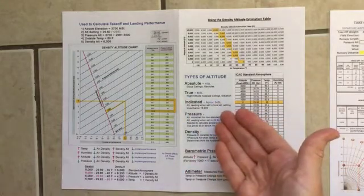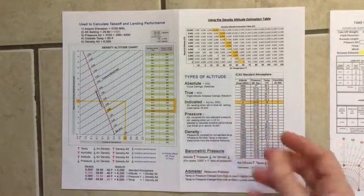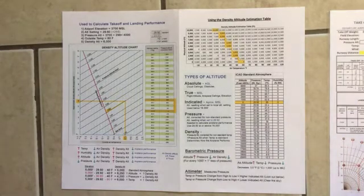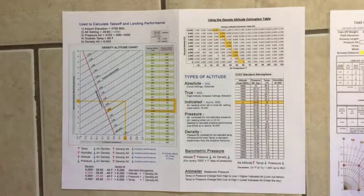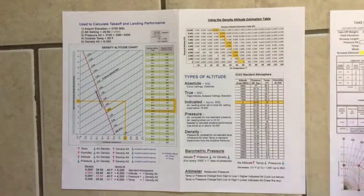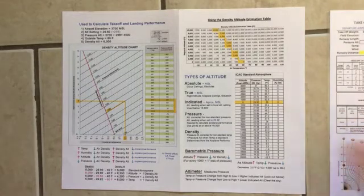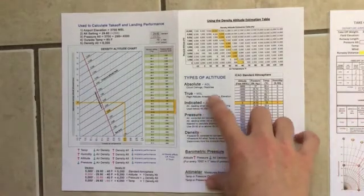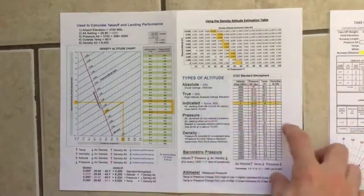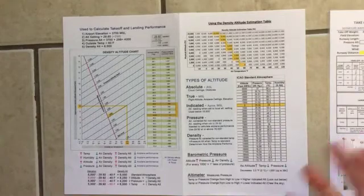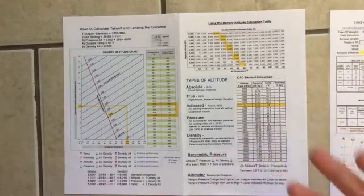Then we have indicated altitude. Indicated altitude is based on your altimeter. Your altimeter is using pressure to determine what altitude it's displaying. In a perfect world where the pressure across the earth would be standard, indicated altitude and true altitude would always remain the same, but it's not.